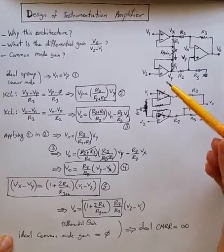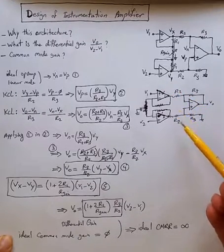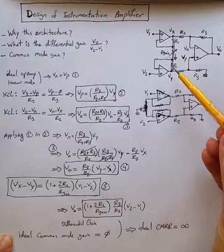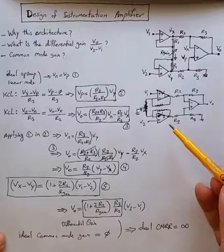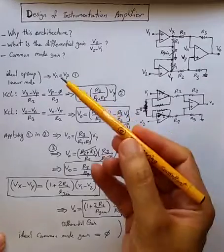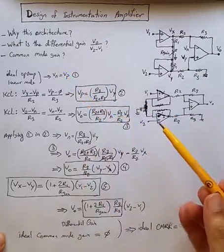So in previous video, part one, we walked through the reasoning behind the choice of architecture for differential amplifier using three op-amps. Now, we want to find a differential gain and common mode gain.